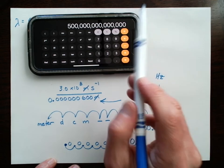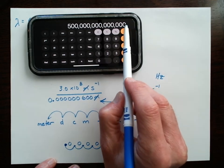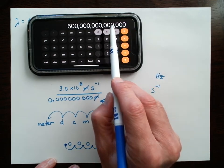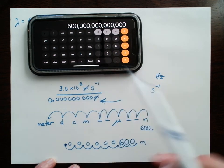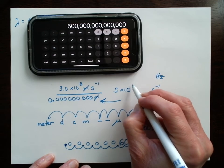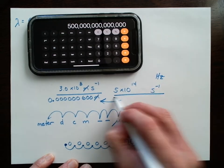Holy cow, that's a big number. Look at that. Oh my goodness. How many zeros is that? 1, 2, 3, 4, 5, 6, 7, 8, 9, 10, 11, 12, 13, 14. So it's going to be 5 times 10 to the 14 hertz.